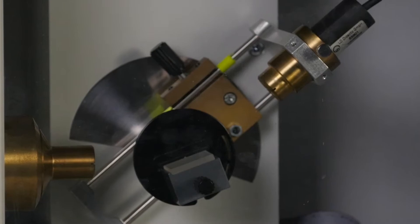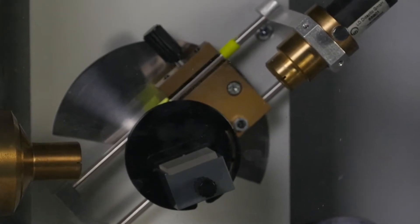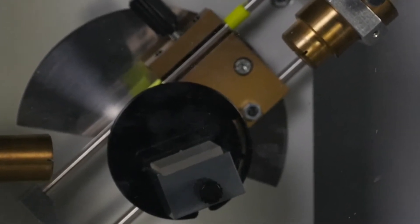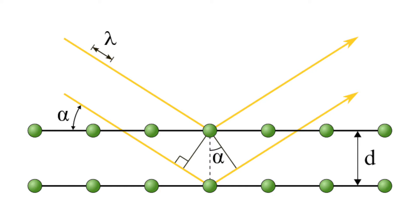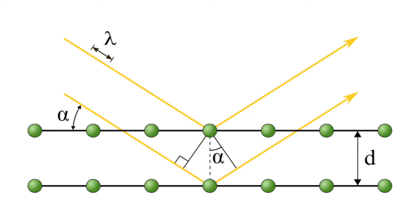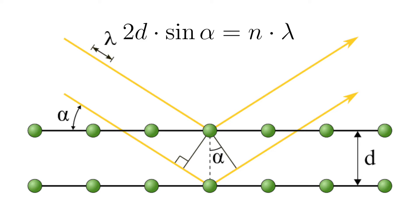The crystal consists of different net planes at which the x-rays are reflected. It is interesting to observe the interference of two parallel rays which are reflected at adjacent planes. If the rays are incident at the angle alpha, the path difference for two rays reflected from adjacent planes at the lattice spacing d is 2d times sinus alpha. To obtain constructive interference, the path difference must be an integer multiple n of the wavelength lambda. This is described by the Bragg condition: 2d times sinus alpha is equal to n times lambda.